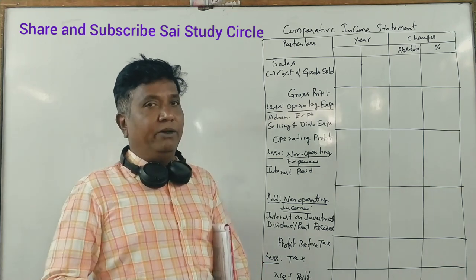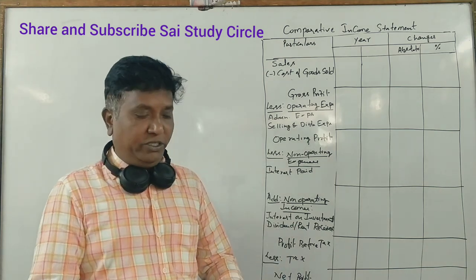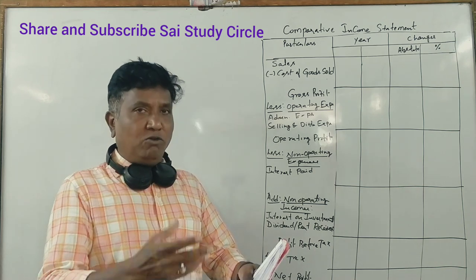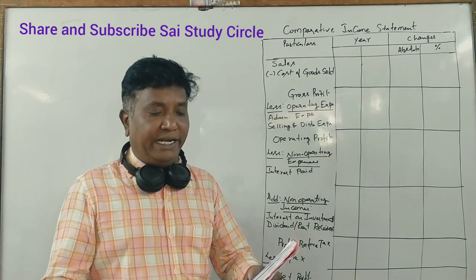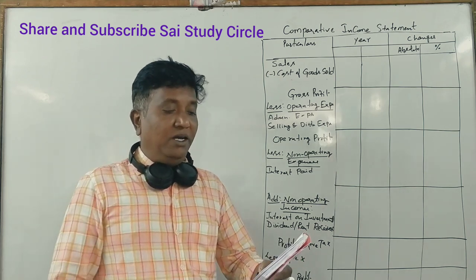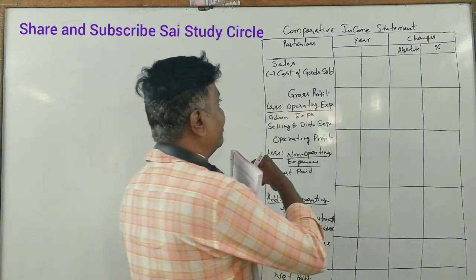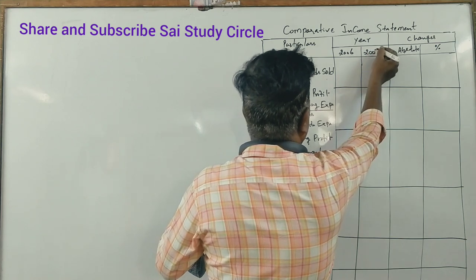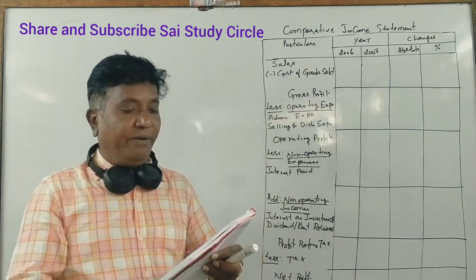I have a question from 2008 and 2012. I will repeat the question: prepare a comparative statement for the following data and comment. The income statement is for 2006 and 2007.